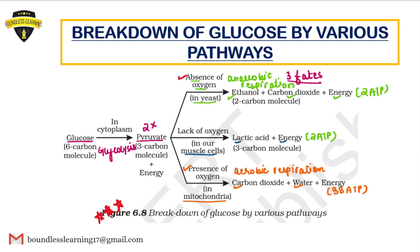In the absence of oxygen, anaerobic respiration in yeast produces ethanol, carbon dioxide, and 2 ATP of energy. If it is our muscle cells with lack of oxygen, pyruvate converts to lactic acid and energy. This point is very important — when oxygen becomes available again, lactic acid will convert back into carbon dioxide and water.